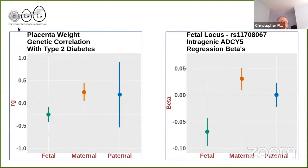Using results after determining the independent fetal, maternal, and paternal effects, the left plot shows a genetic correlation between placental weight and type 2 diabetes. The fetal genome in green has a negative correlation between placental weight and type 2 diabetes, while the maternal genome in orange has a positive correlation. The plot on the right shows the betas from the regression focusing on the SNP in the ADCY5 gene, where we again see opposing effects for the fetal genome compared to the maternal genome.